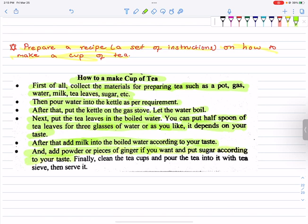Finally, clean the tea cups and pour the tea into it with tea sieve then serve it. It's a simple method. How to make a cup of tea.